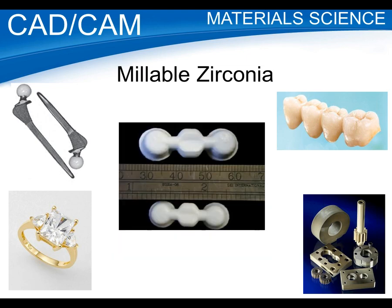In its sintered state, zirconia is very strong but very hard to work with. In its green or pre-sintered state, it's also hard to work with because of shrinkage. You can see the green or pre-sintered state versus after firing — significant shrinkage. Depending on the density, 22% to 25% shrinkage, which is significant and nothing you could really control by hand. But for CAD-CAM, it's a piece of cake — you just dial in that shrinkage factor. The manufacturer calculates the density and shrinkage factor and provides that for you.